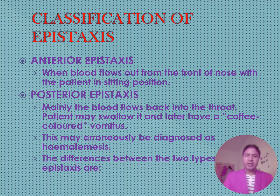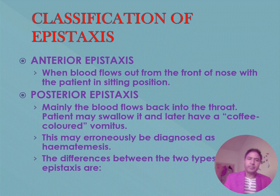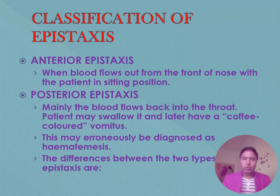In anterior epistaxis, blood flows out from the front of the nose with the patient in the sitting position. In posterior epistaxis, blood flows into the throat; the patient may swallow it and later have coffee-colored vomitus, which may erroneously be diagnosed as hematemesis.